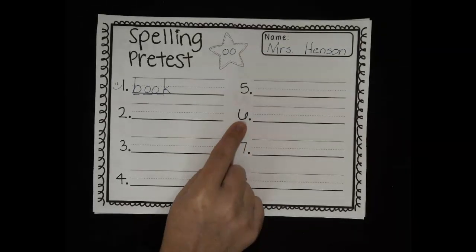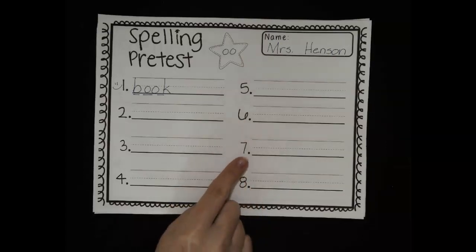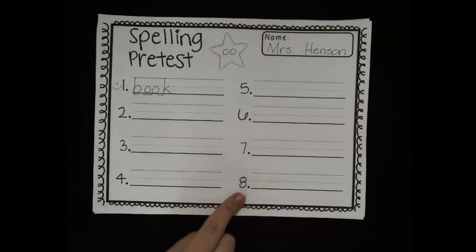Number six, wood. Wood. I got more wood to put on the fire. Wood. All right, number seven, buy. Buy. I used my money to buy an ice cream cone. Buy.